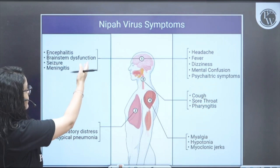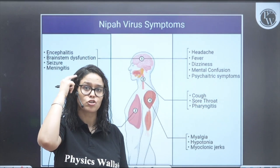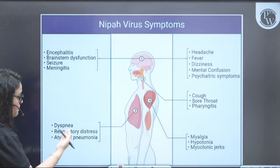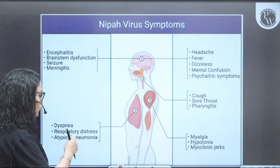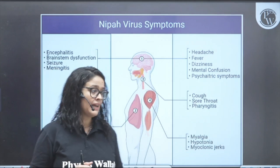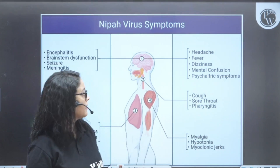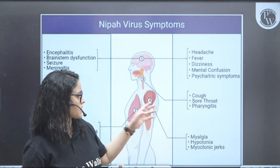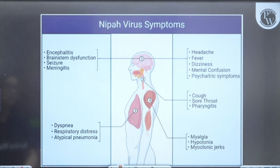The virus infects the brain causing meningitis — inflammation of the meninges — as well as dyspnea, respiratory distress, and atypical pneumonia. Muscle-related symptoms are also observed, as the virus infects both muscles and the nervous system, making it extremely dangerous.